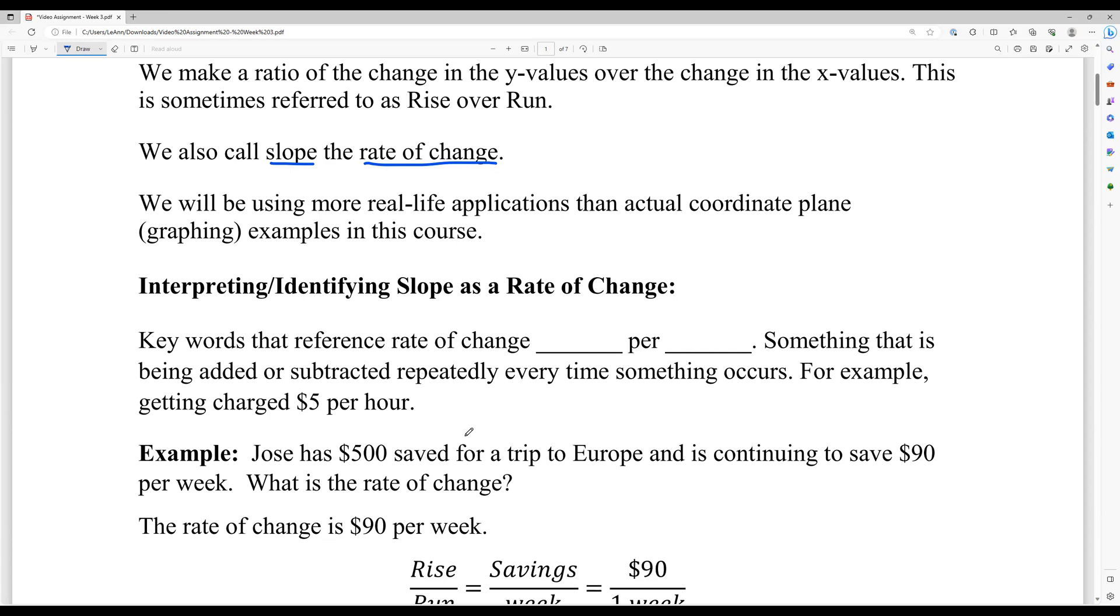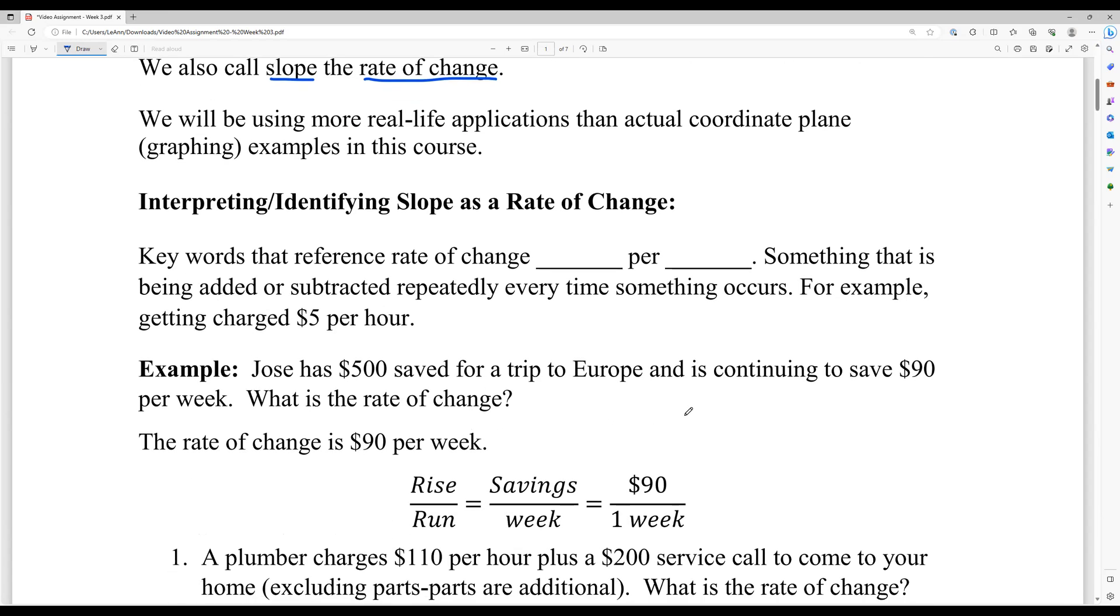Jose has $500 saved for a trip to Europe and is continuing to save $90 per week. There's the key, the $90 per week. So that's the rate of change, the $90 per week. And kind of seeing this in the rise over run format, we have savings per week. And notice it's $90 per one week. So every week that he continues saving, he'll add an additional $90.